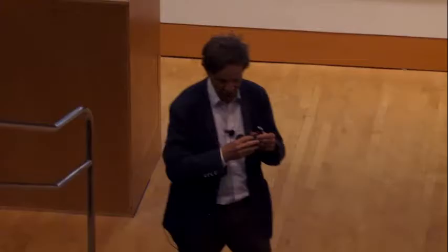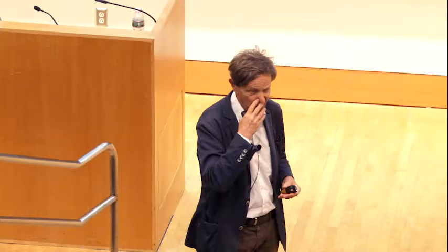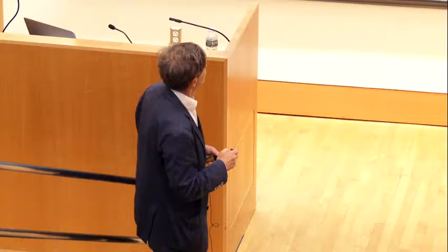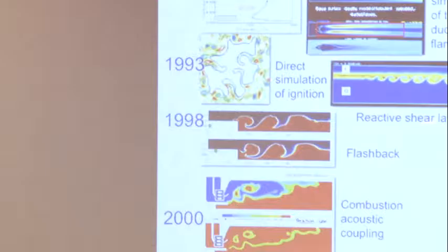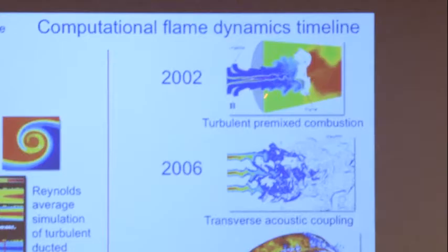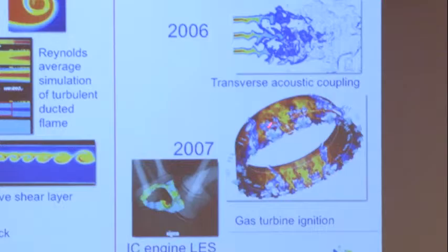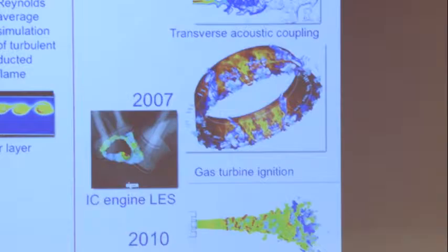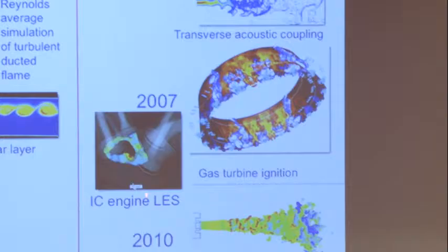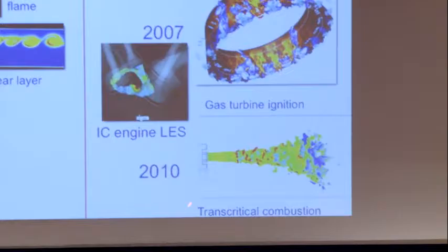We studied flashback using flame thickening in 1988, and then some preliminary calculations of swirling flames stabilized in a cylindrical box, and calculations of ignition. There is a parallel development in IC engines — people are actually calculating cycle-to-cycle variations. Now in 2010 we were able to calculate transcritical combustion and compare that with experiments.